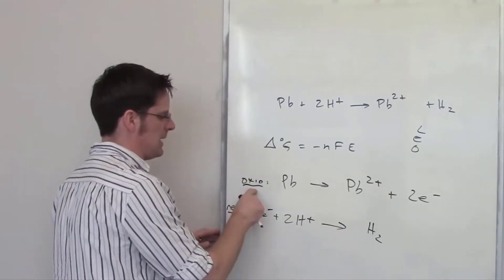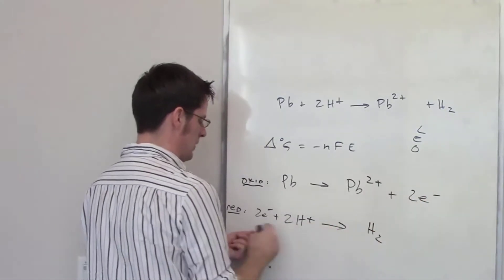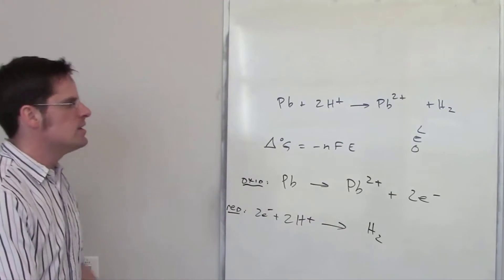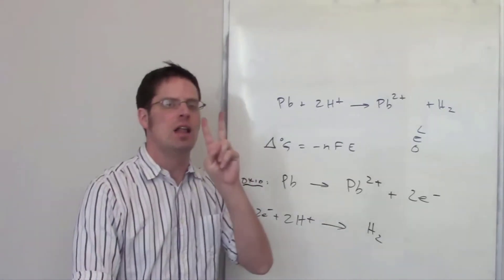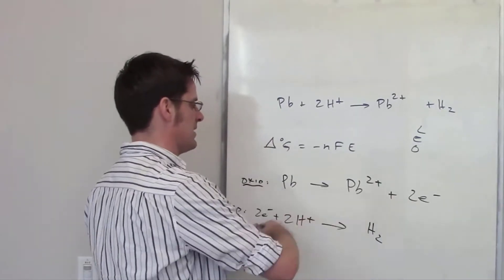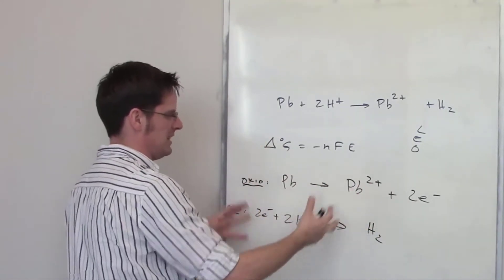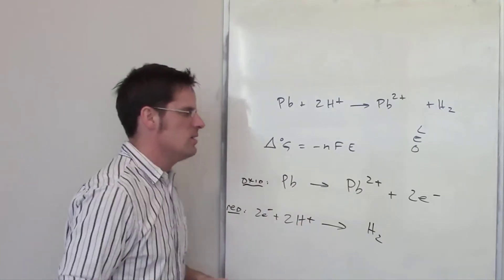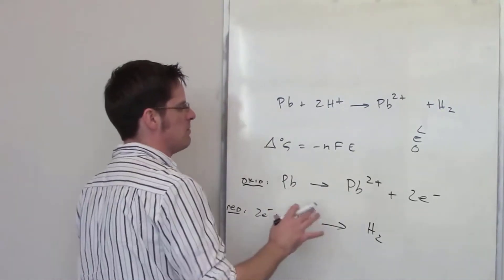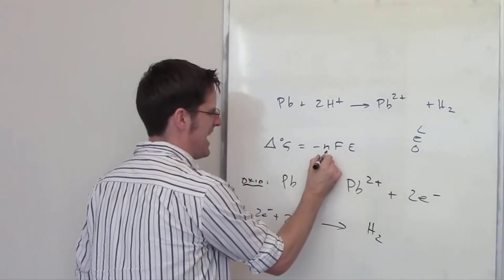What's happening is lead is being oxidized by spitting out two electrons, and those two electrons are received by H plus to reduce it to become H2. This is a two-electron process, and these two electrons balance out very beautifully. The total number of molar equivalents of electrons is two — that is what N equals.